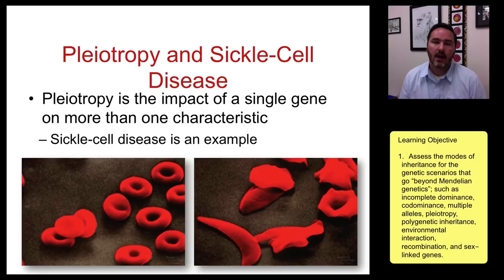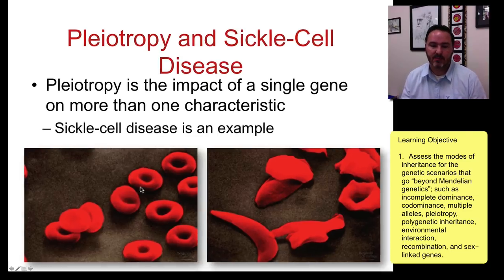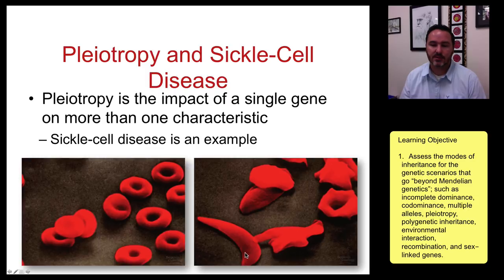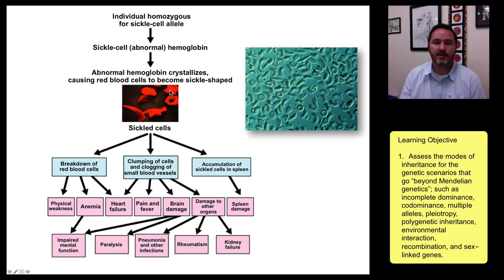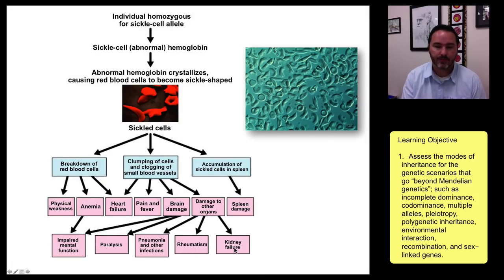The next interesting concept beyond Mendel is pleiotropy — the impact of one single gene on multiple characteristics. Sickle cell disease is a great example. Normal red blood cells have a dimpled appearance, while sickle cell red blood cells have a sickle shape. This is one gene with one mutation causing one protein change, but the downstream phenotypic effects are multiple: breakdown of red blood cells, clumping of cells, accumulation in the spleen, anemia, heart failure, brain damage, spleen damage, paralysis, rheumatism, and kidney failure, among many others.